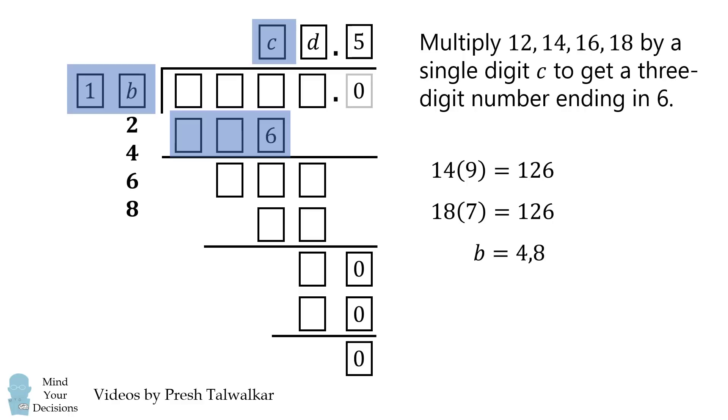Thus, B is either 4 or 8. And if B is 4, C is 9. And if B is 8, C is 7. We'll ignore this for a moment and just focus on B.